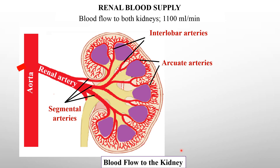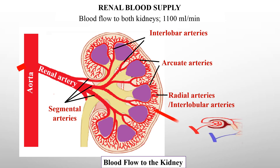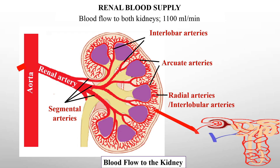Arcuate arteries subdivide to form the radial arteries. Radial arteries were formerly called the interlobular arteries. They branch off at right angles to the arcuate arteries and further branch to enter the nephron.